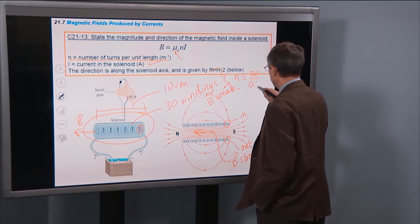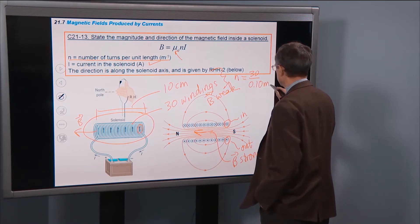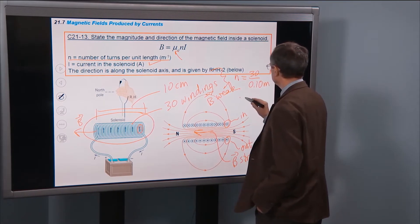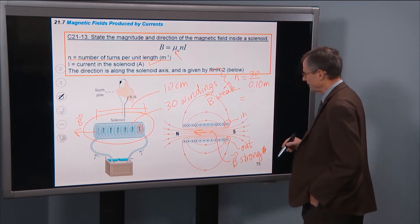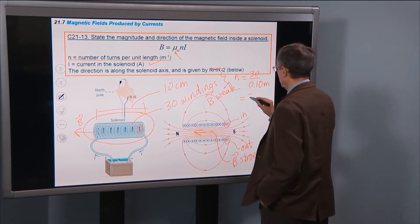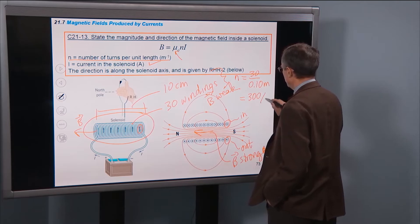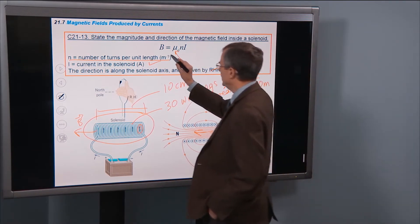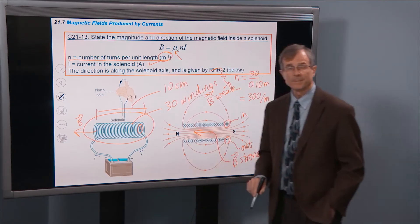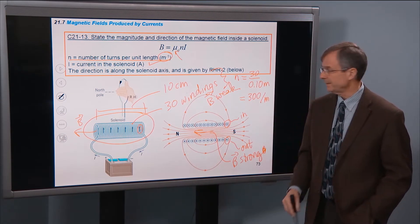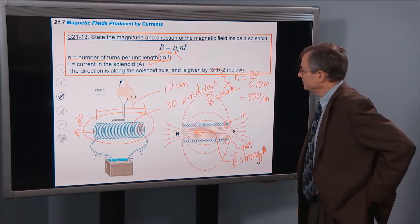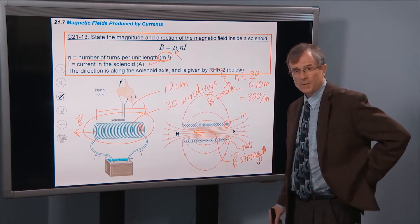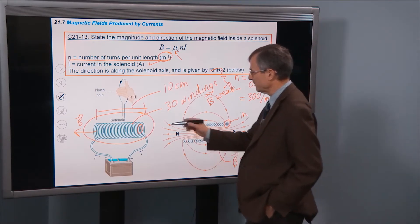We convert that to meters at 0.1 m. And so multiply numerator and denominator by 10, and that's 300 per meter. So this is measured in inverse meters or per meter. Number of windings per unit length.